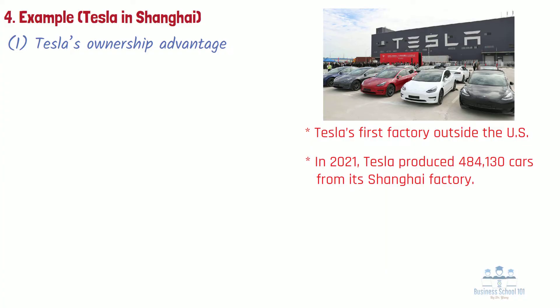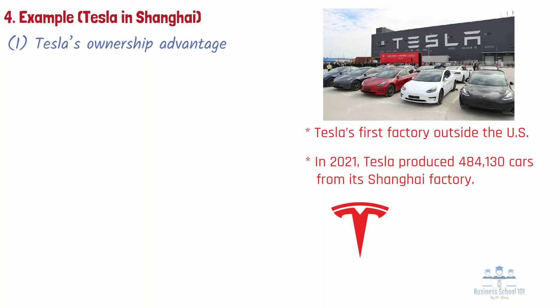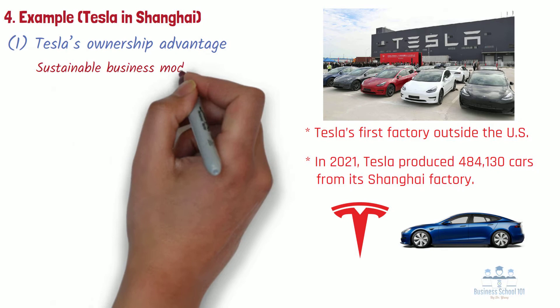First, Tesla's ownership advantage. Tesla's brand image is one of its core sources of competitive advantage and one of the main differentiators that sets it apart from the world's crowd of automobile brands. While several auto brands are there in the industry, including those making electric vehicles and hybrids, Tesla has acquired a very distinct image. Tesla's sustainable business model and its focus on innovation have helped it acquire the image of a transformation leader in the world of mobility.